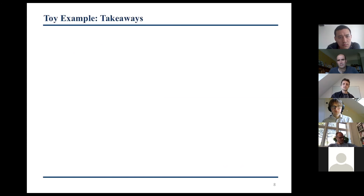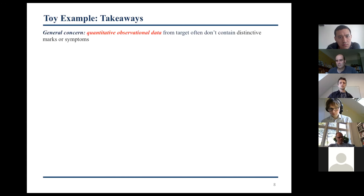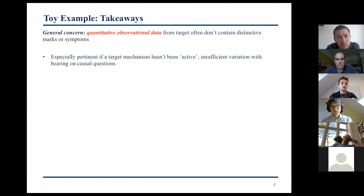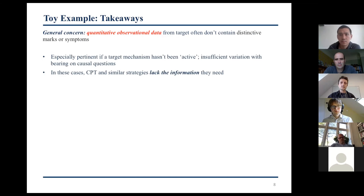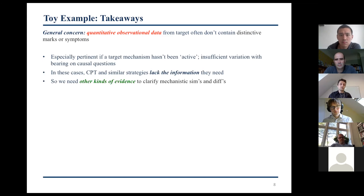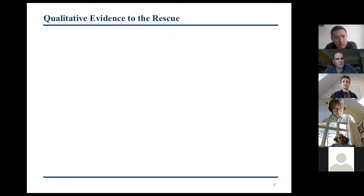The general concern is that quantitative observational data from a target often just don't contain distinctive marks or symptoms useful for underwriting an extrapolation — especially when the target's mechanism hasn't been active and there is insufficient variation bearing on the causal questions we need to clarify. In these cases, comparative process tracing and similar empirical strategies simply lack the information they need to function properly. So we need other kinds of evidence. The alternative is qualitative evidence to the rescue.